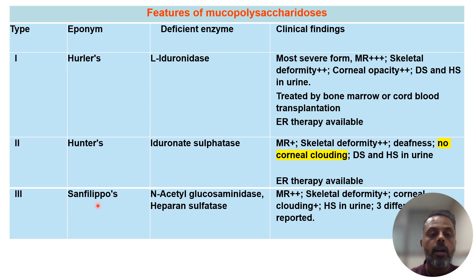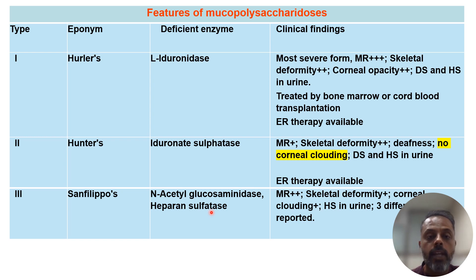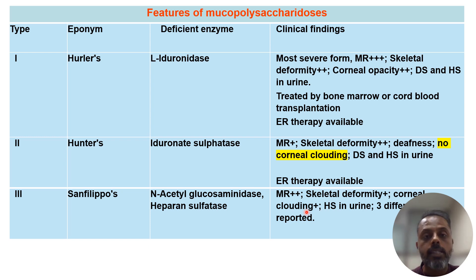Type 3 mucopolysaccharidosis is Sanfilippo's syndrome. It is associated with the deficiency of N-acetyl glucosaminidase or heparan sulfatase enzyme. It is associated with mental retardation, skeletal deformity, corneal clouding, and excretion of heparan sulfate in the urine. There are three different forms of Sanfilippo's syndrome reported. Remember: Hunter's disease is not associated with corneal clouding.